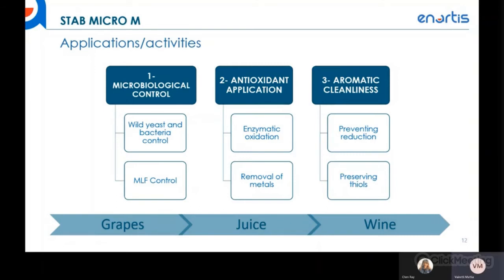Stam Microem's main activity is microbiological control — controlling wild yeasts and bacteria. In the juice and grapes there is a huge population of wild yeasts and bacteria from nature. We want to control and dominate them so that our fermentation is clean and made only from selected yeast — our Saccharomyces cerevisiae strains such as Bianus, Torula, or other selected strains. It also allows for controlled malolactic fermentation: chitosan in Stam Microem will kill all bacteria inside the juice, so if MLF is not desired, apply Stam Microem and inoculate with a selected strain later.